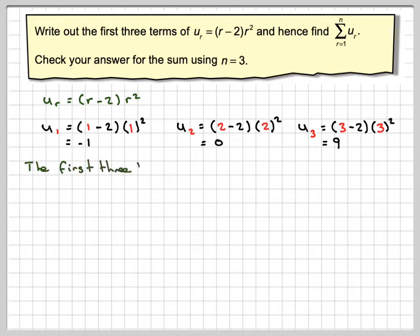Right, the first three terms then are minus 1, 0, and 9. So the sum of the first n terms of this will be the sum of (r minus 2)r squared from r equals 1 to n.